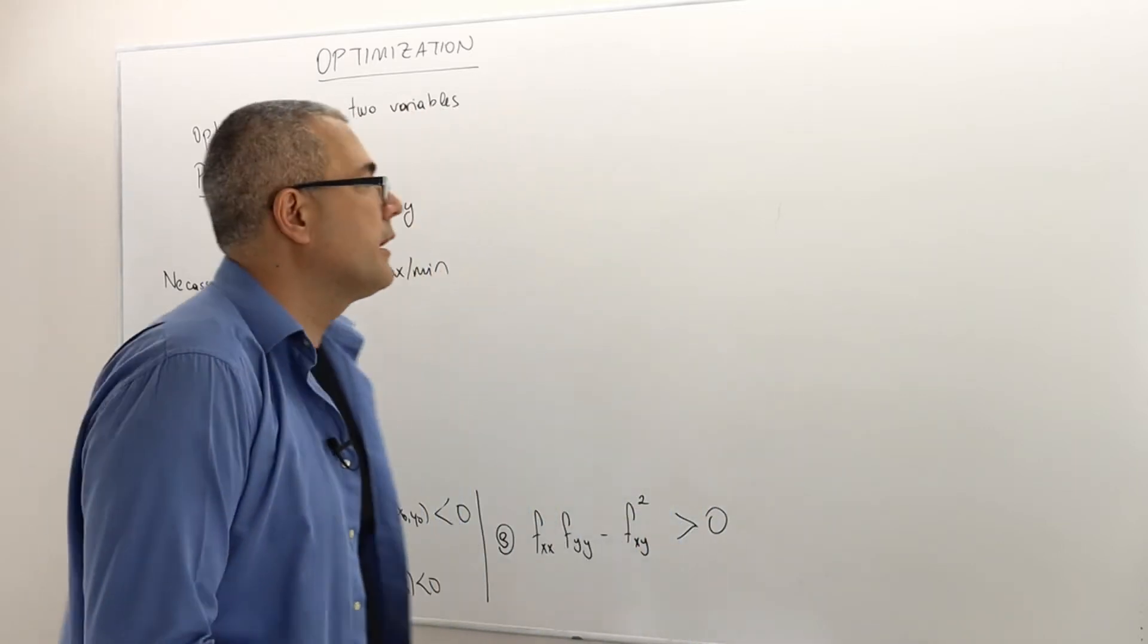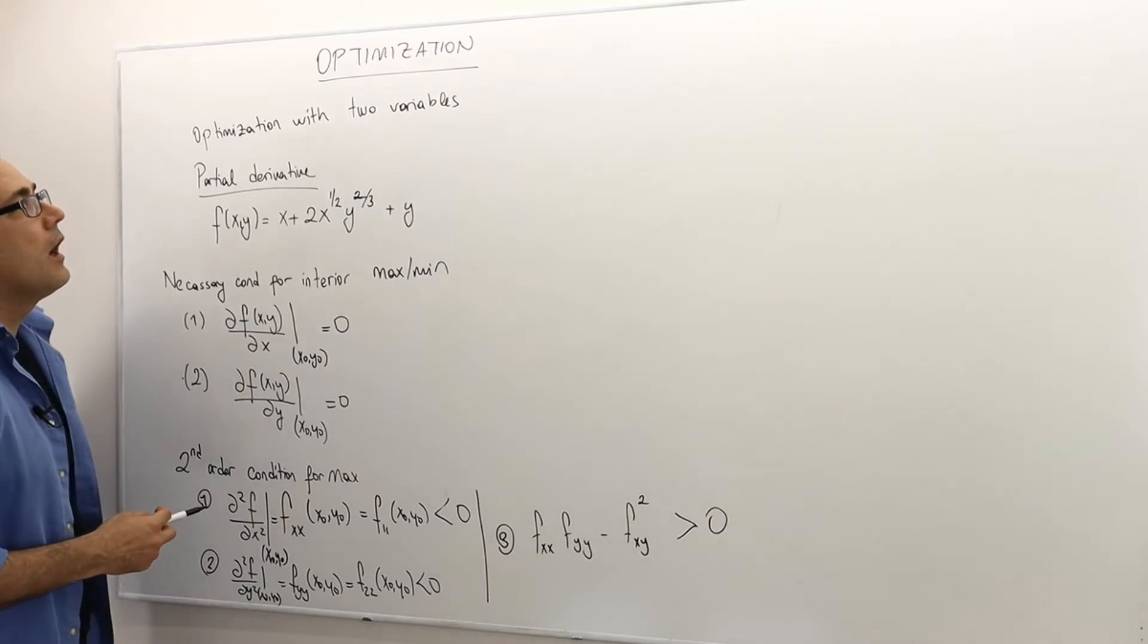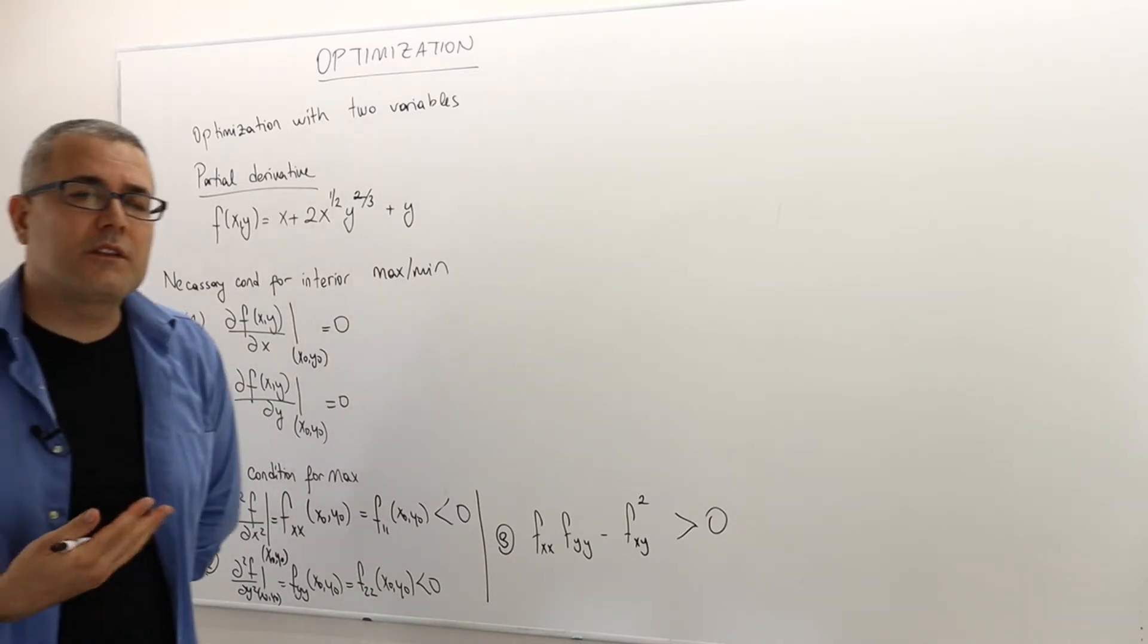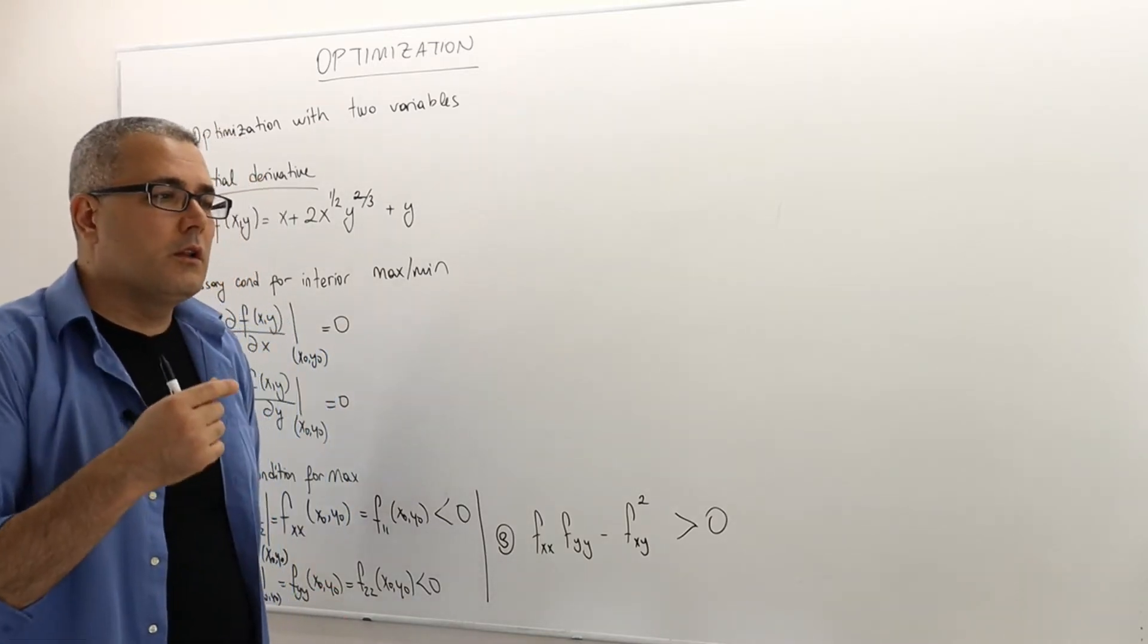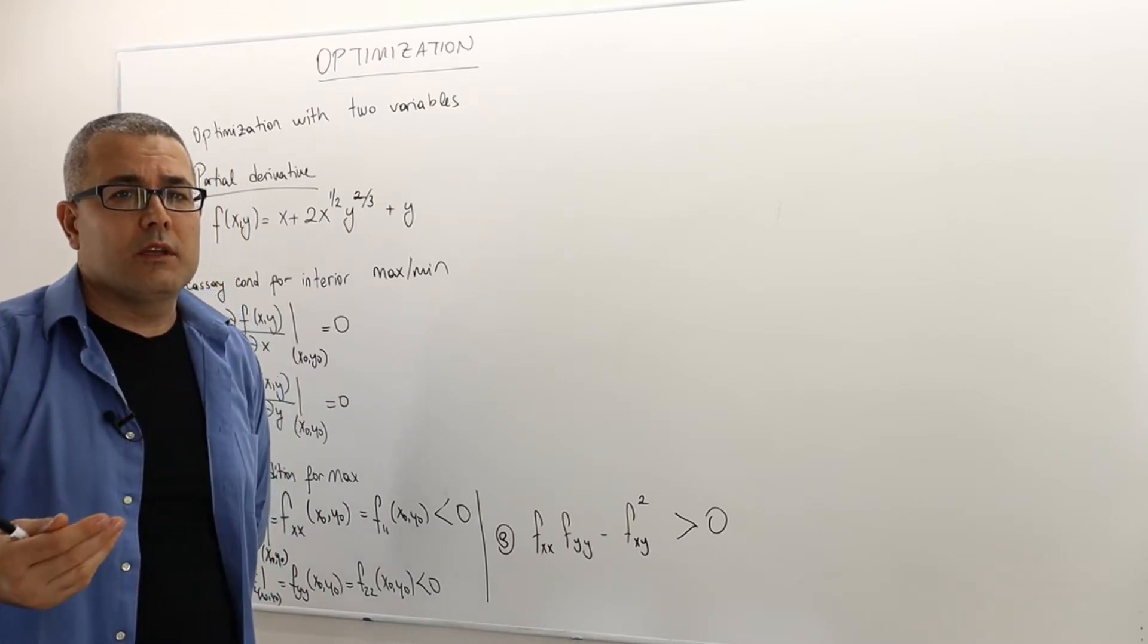Now consider that I have a function with two variables. So what is the necessary and sufficient condition for local interior max and local interior minimum?